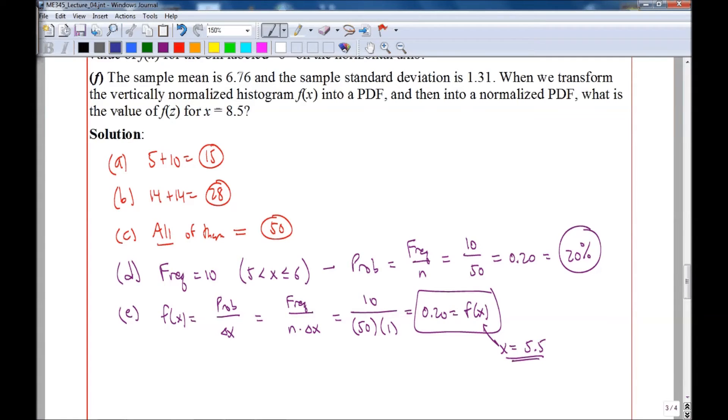Finally, let's do part F. Sample mean is 6.76, sample standard deviation is given as 1.31. Let's transform to a normalized PDF. So we're going to transform the vertically normalized f(x) into a PDF and then into a normalized PDF. We're going to calculate the value of f(z) for x equal 8.5.